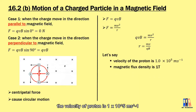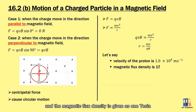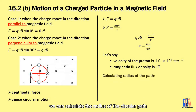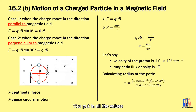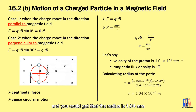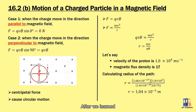For example, if the velocity of a proton is 1 × 10⁵ m/s and the magnetic flux density is 1 Tesla, substituting all the values gives a radius of the circular path of 1.04 mm.